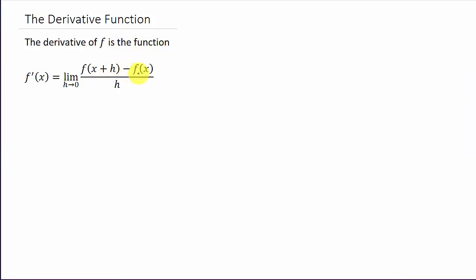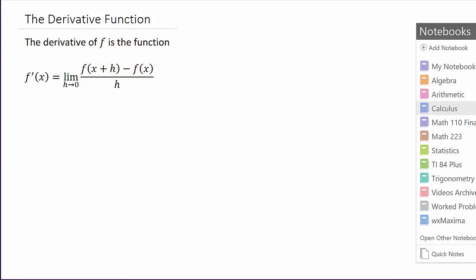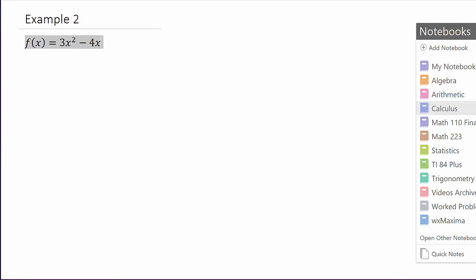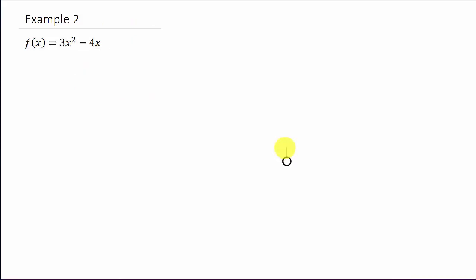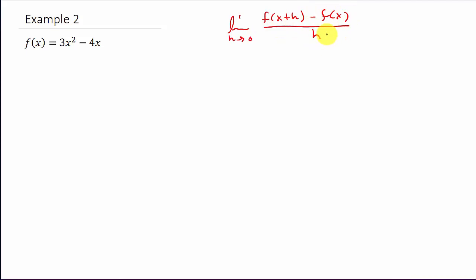So here's the definition. The derivative of a function f is f prime of x, which is the limit as h goes to 0 of f of x plus h minus f of x, divided by h. Let's look at example 2.